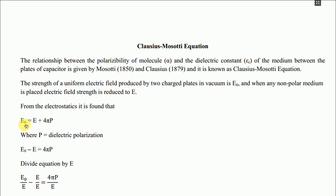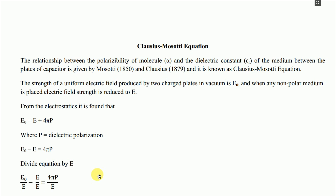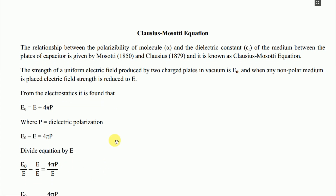Here, E0 is the electric field strength in vacuum between the two plates, E is the electric field strength when a nonpolar medium is placed between the plates, and P is the dielectric polarization. Moving E to the left side: E0 − E = 4πP. Dividing through by E: E0/E − 1 = 4πP/E.